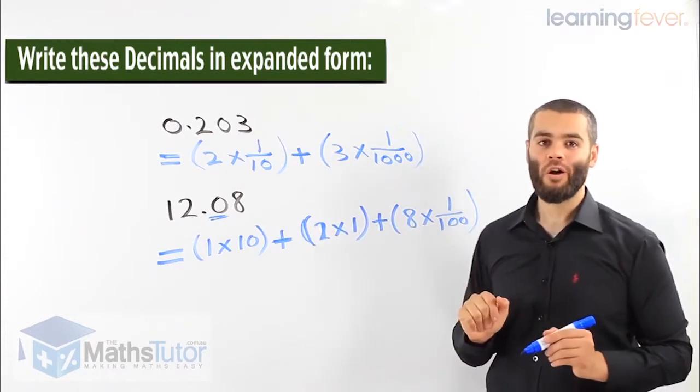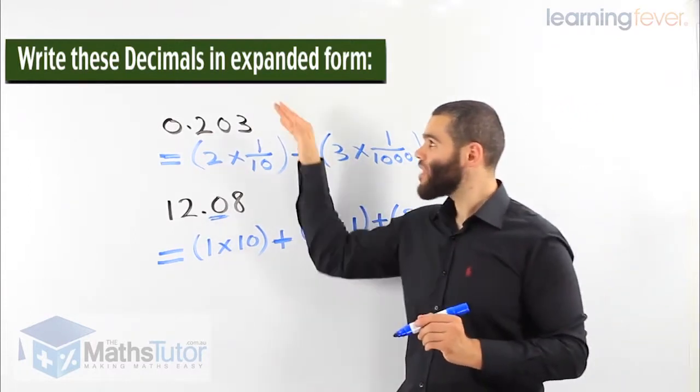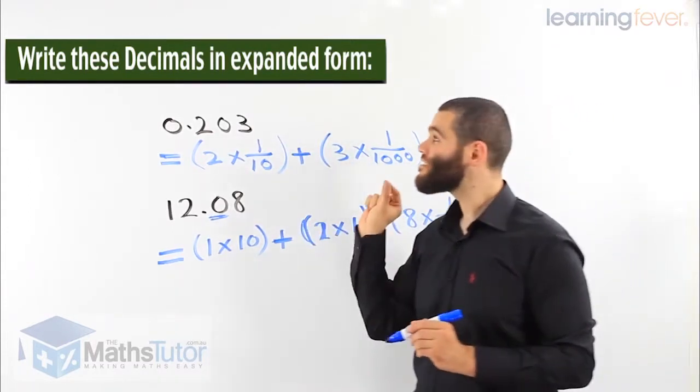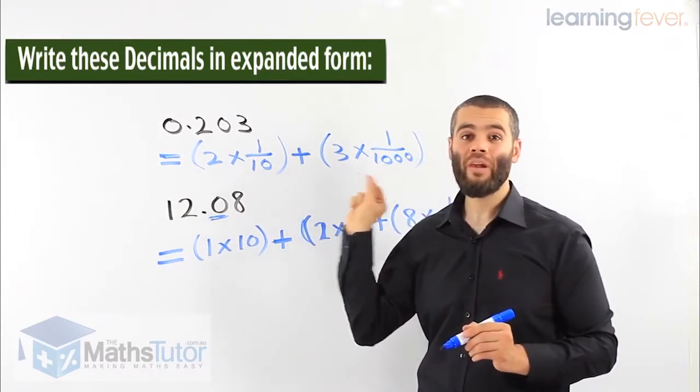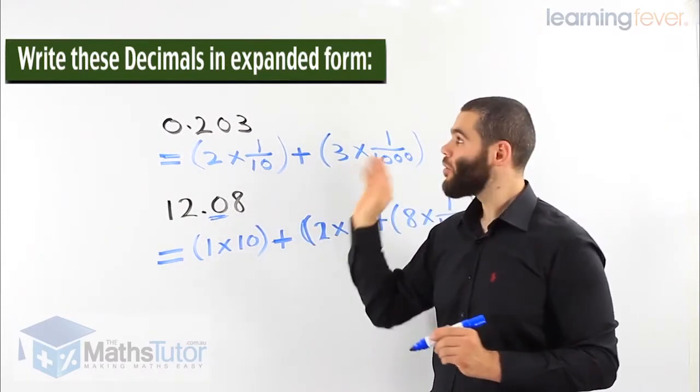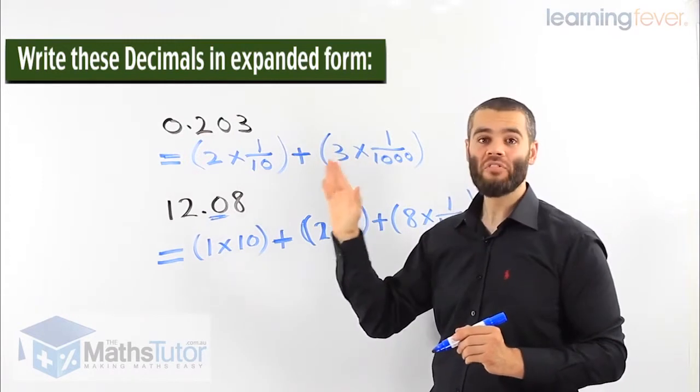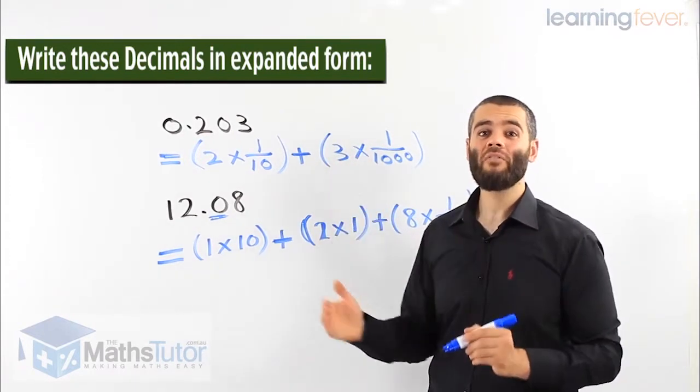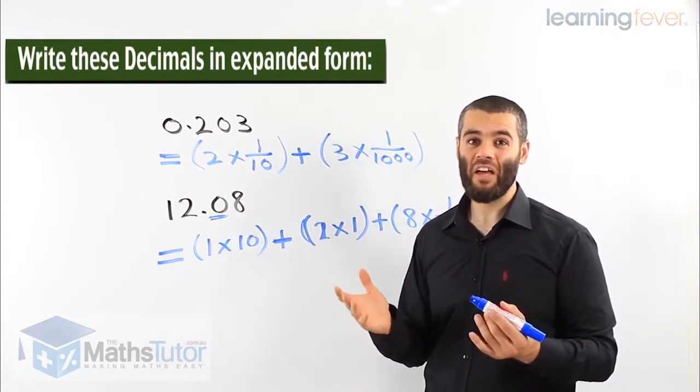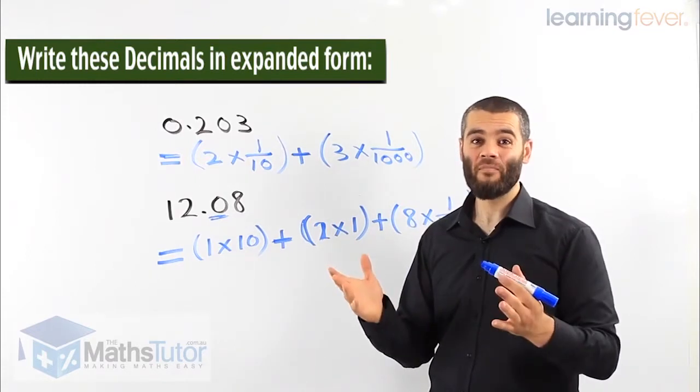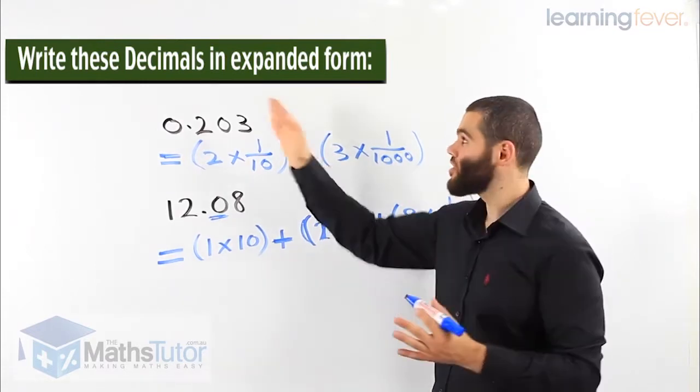8 times 1/100. So as you can see, understanding decimals is very easy as long as you know the place values. Very important. We have tenths, hundredths, thousandths. We can even have ten thousandths and hundred thousandths which keep going.